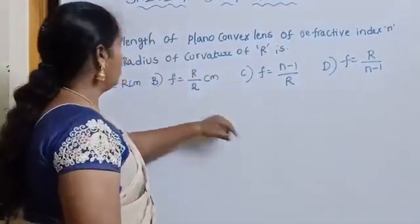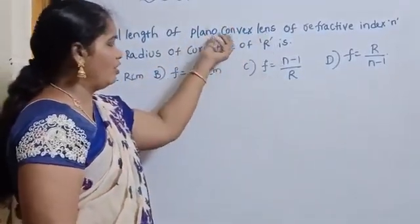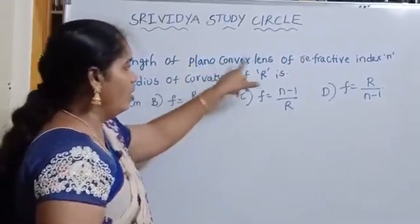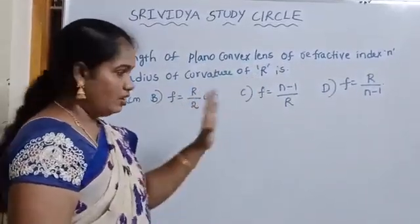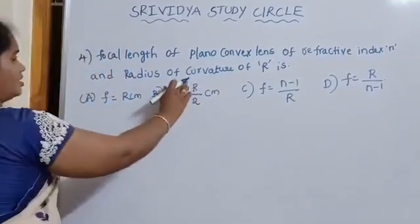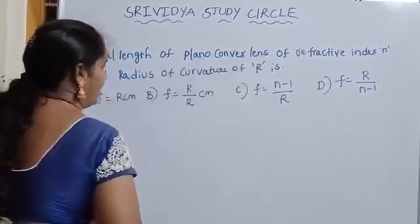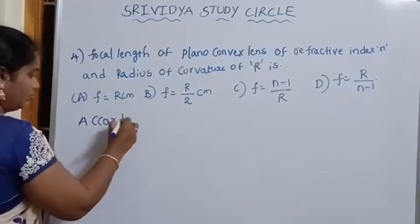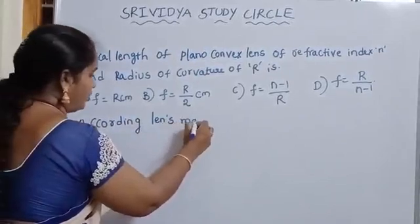Next problem: focal length is 10 cm convex lens. Here plano convex lens means having only one curved surface of refractive index n and radius of curvature is R. Only one formula is represented by both radius of curvature and refractive index n. According to lens maker's formula.